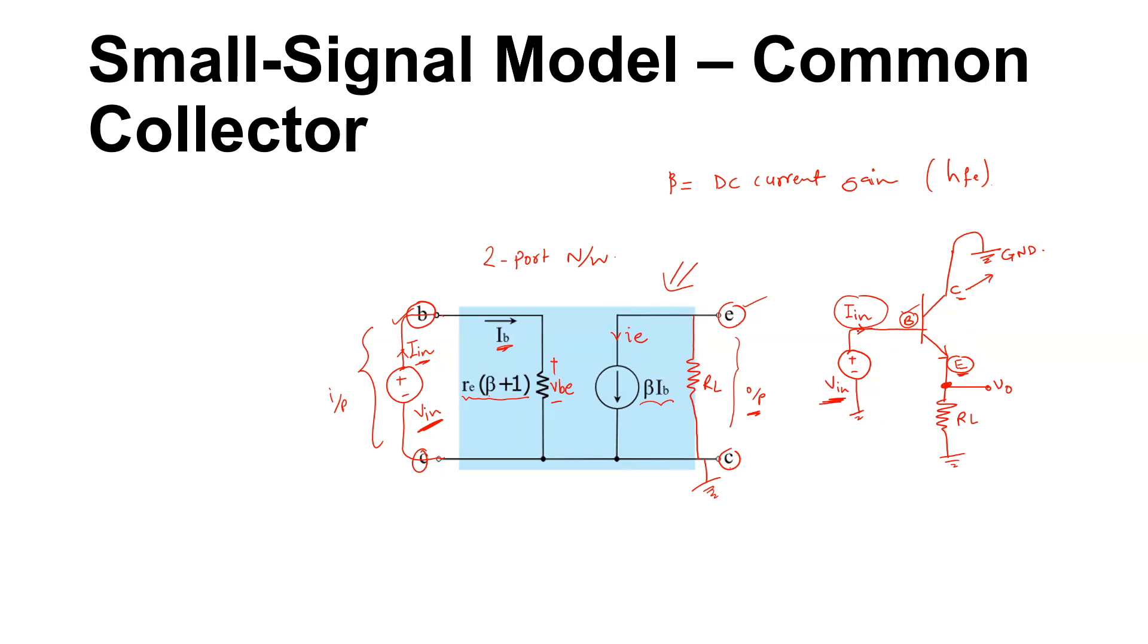You have an input signal applied here and there is this current which is Ic, and here the current that you have is Ie actually. The Vo will be the voltage, the current that is flowing here. From the model you have this Ie which is beta times Ib. The output current is Ie.